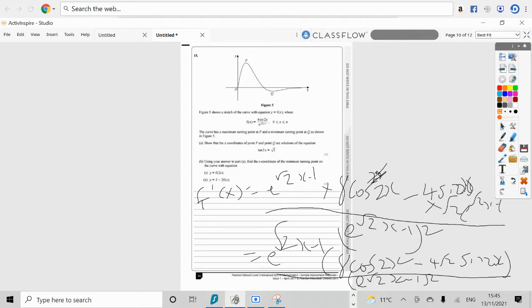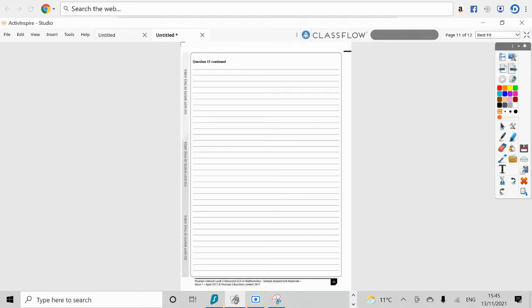I'm going to move to the next page real quick. So, you get 8 cosine of 2x minus 4 root 2 sine 2x, all divided by e root 2x take away 1. Now, we need to put that equal to 0, don't we?